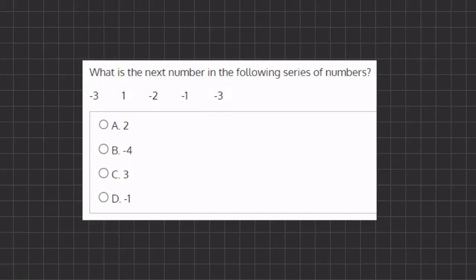In this problem we are given a series of numbers and we want to know what the next number in our series will be. Let's take a look at our transitions. Moving from negative 3 to positive 1, we had to add 4.